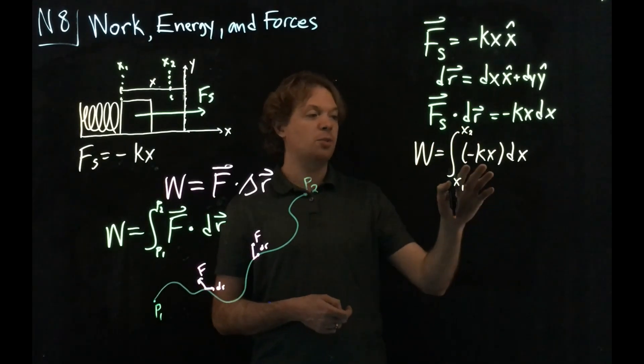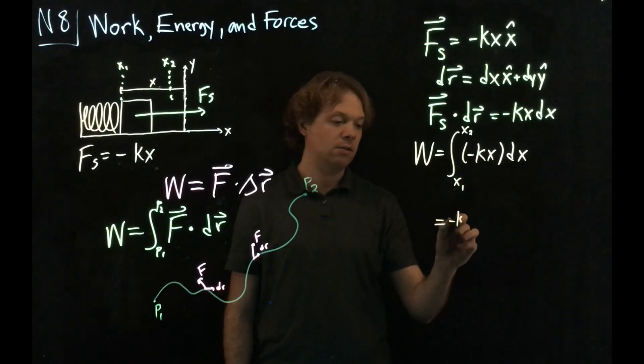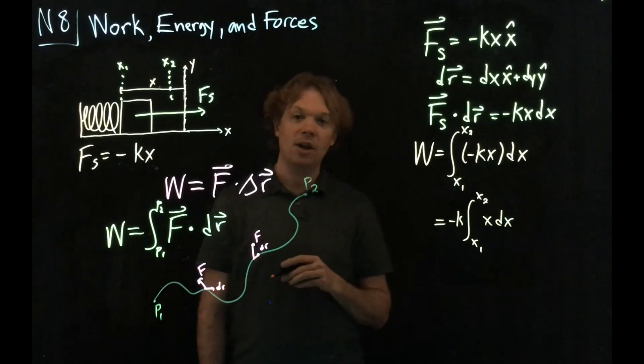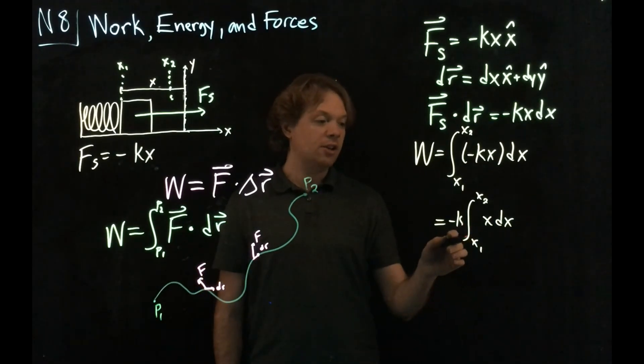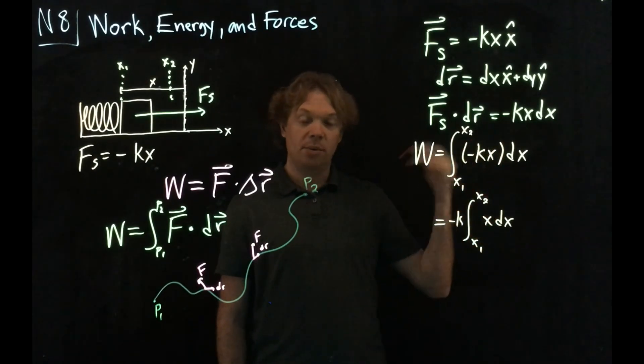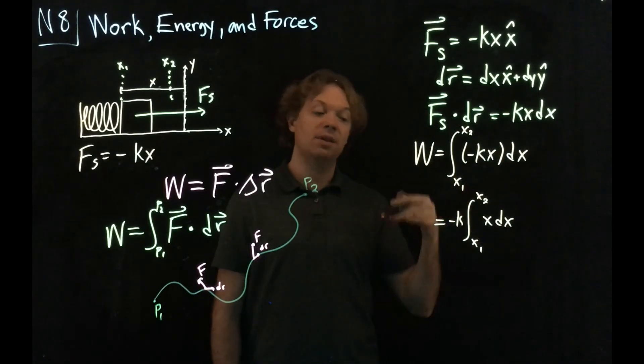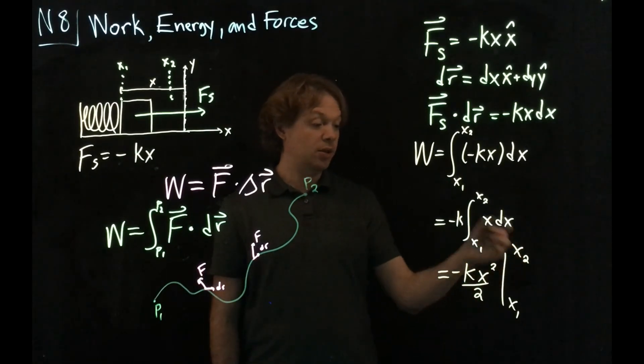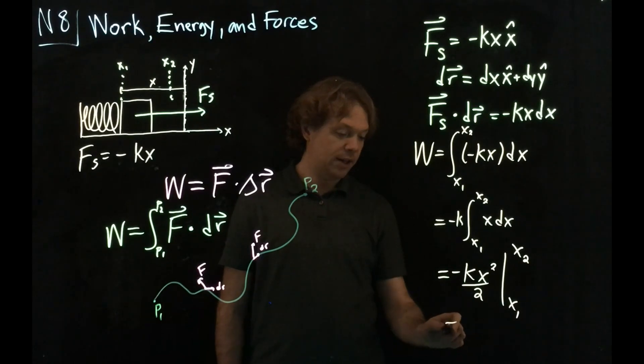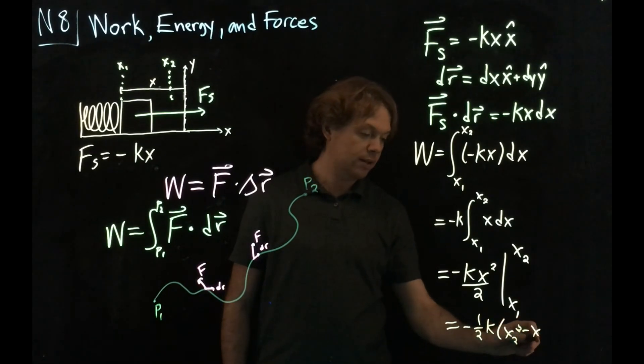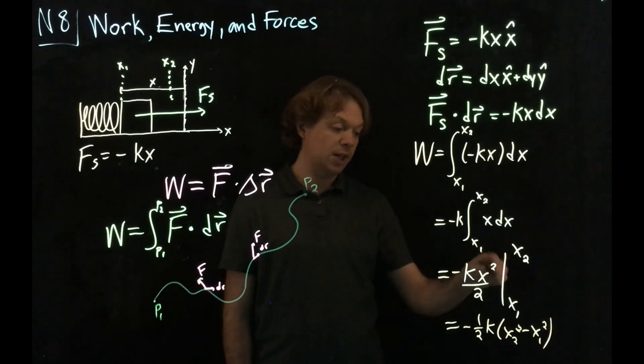Now I want to do this integral. First I'm going to pull out this minus k because it's constant. That's minus k integral from x1 to x2 of x dx. Now we need to go back to your calculus knowledge. How do you integrate x dx? Remember the integration rule, x goes up one power to x squared, and then you have to put a one-half in front to account for the fact that when you take that derivative, one-half goes away and we get minus kx squared over 2, integrated between x1 and x2. When you put in the limits, you put in x2 first, then put in x1, and our final answer becomes minus one-half kx2 squared minus x1 squared.